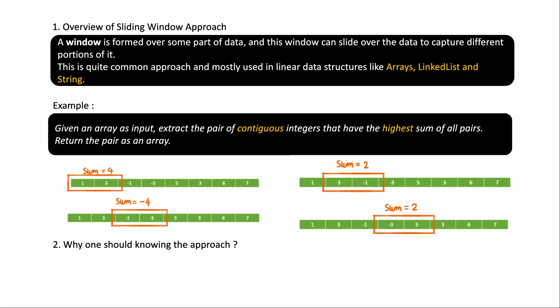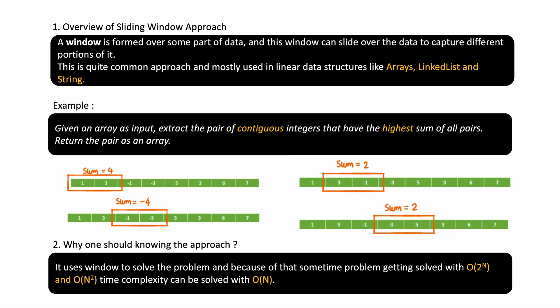Why should one know this approach? Because the window slides and you take a decision on a small subset of your data, it can solve problems of exponential or quadratic time complexity within linear time — O(n) — so that's where we get the benefit with this approach.